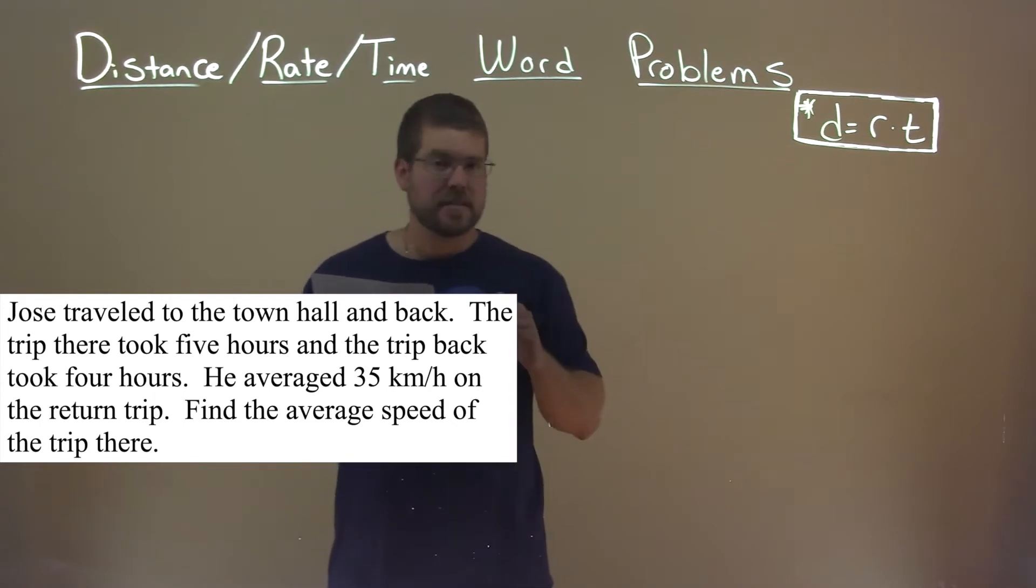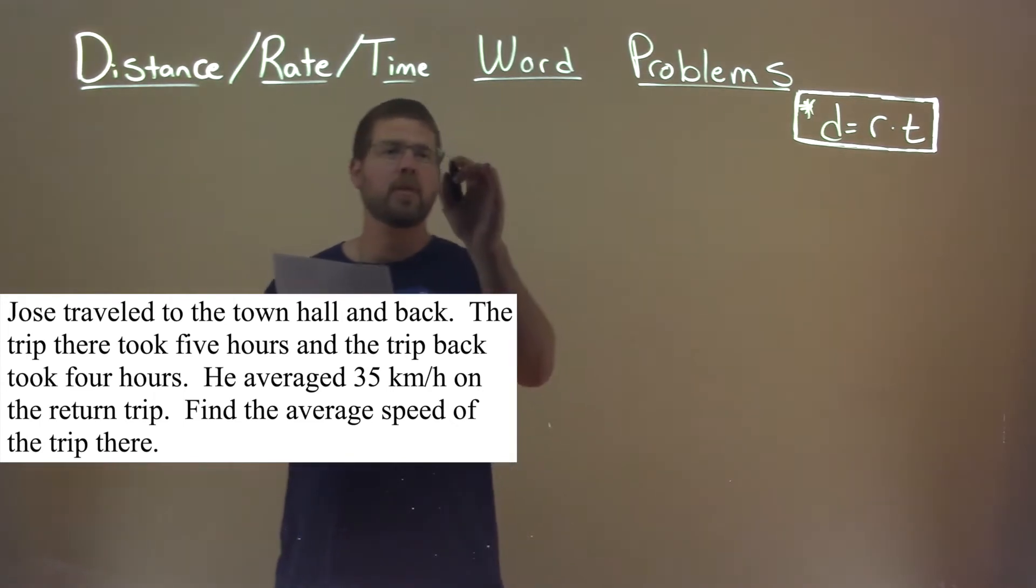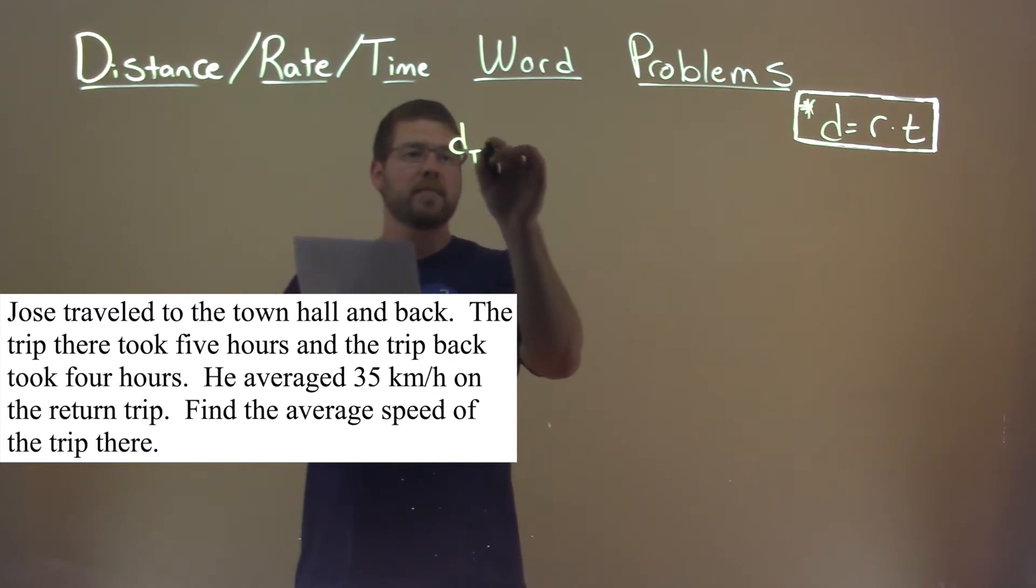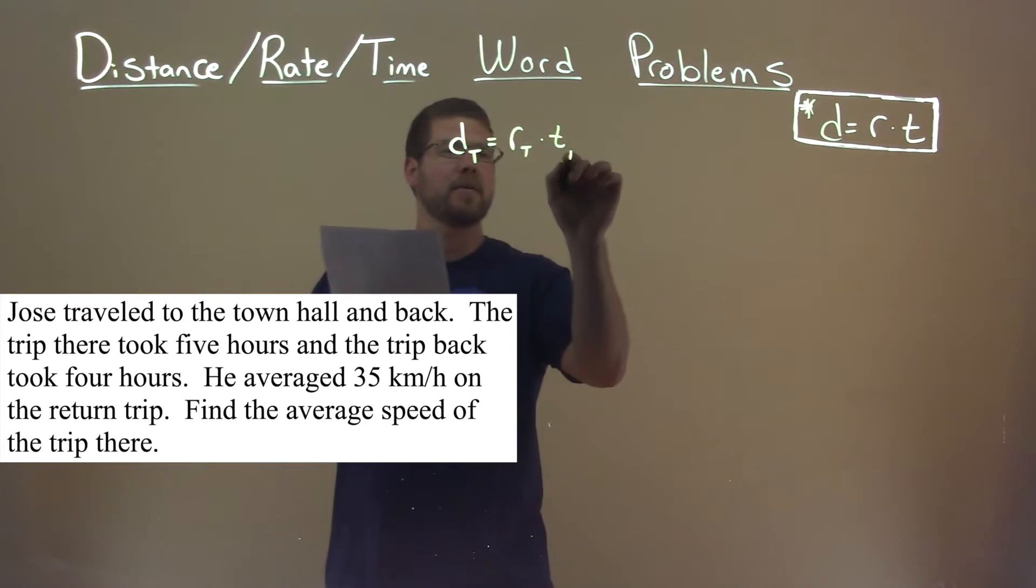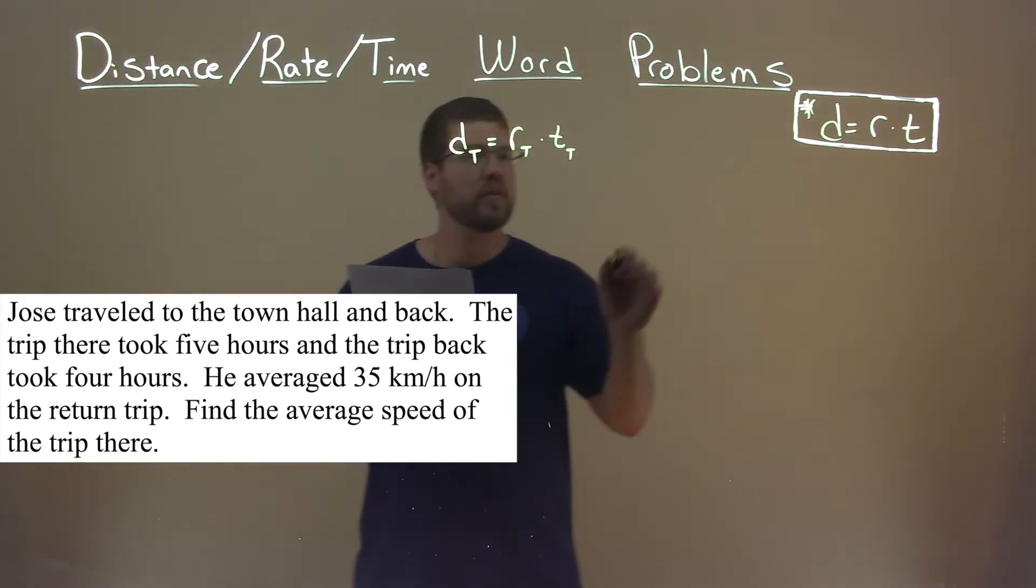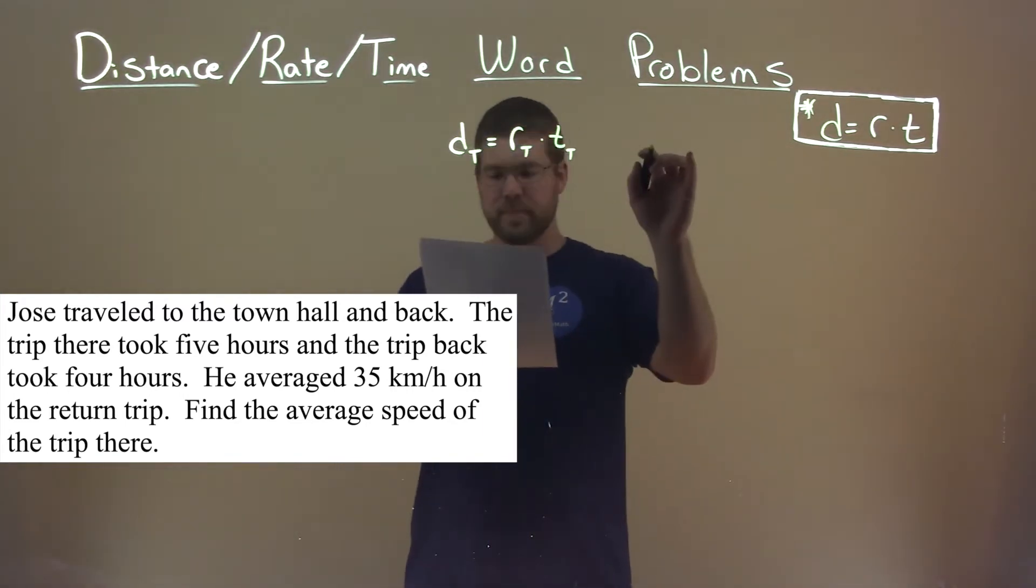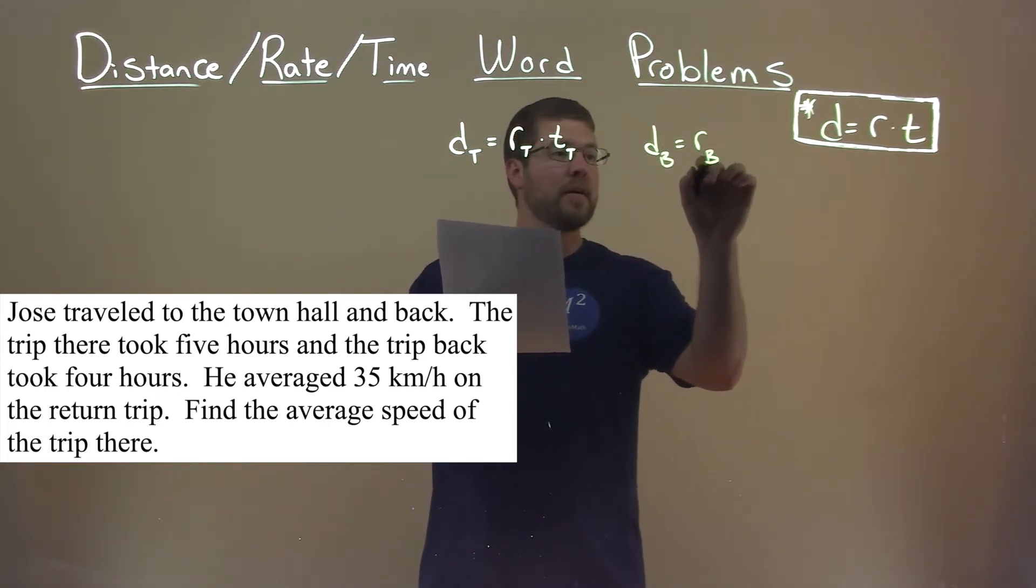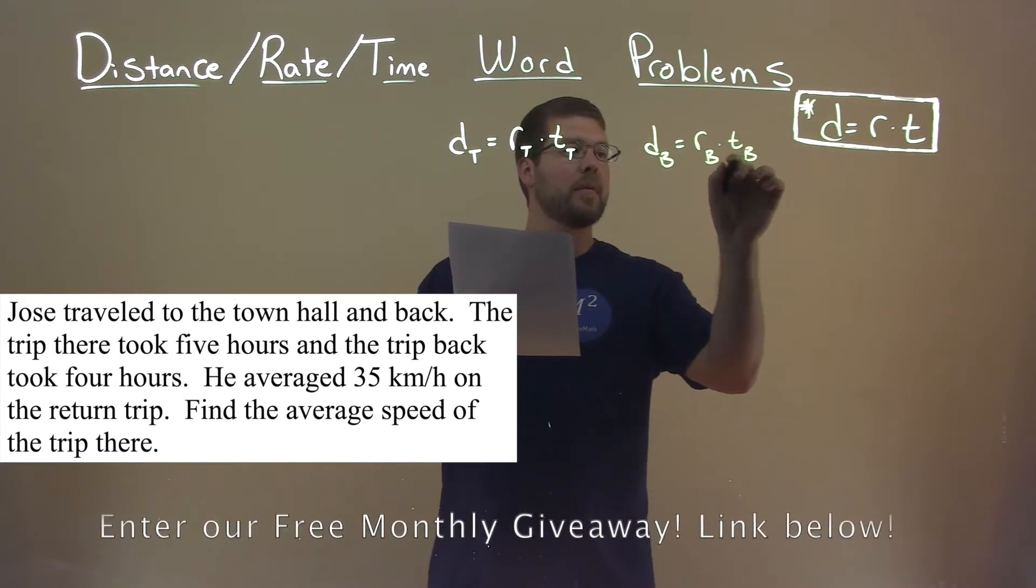So we know our formula: distance equals rate times time. But we're going to break it out into two sections. Distance there, d_t, is equal to the rate there times time there. And we're going to do the same thing with the trip back for Jose. Distance back is equal to the rate back times time back.